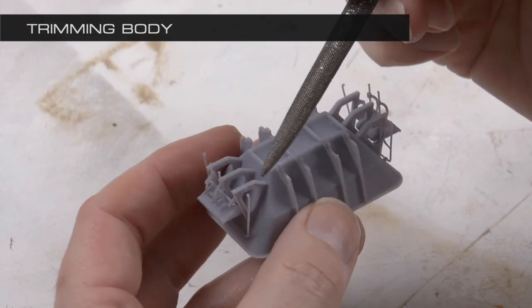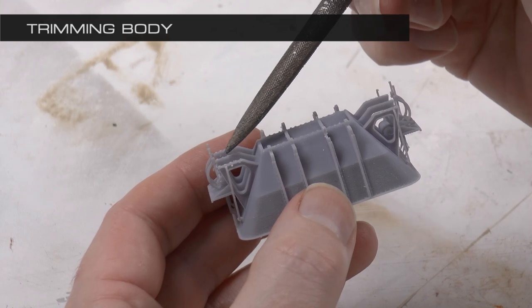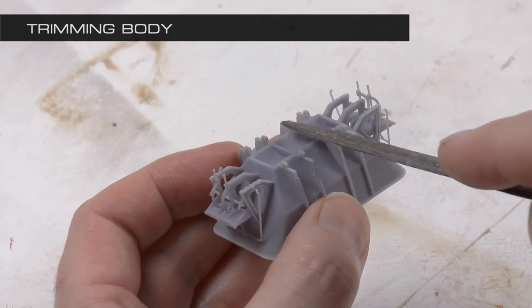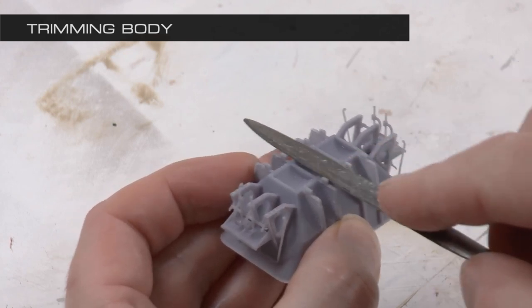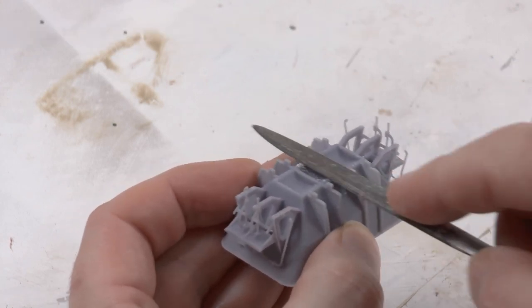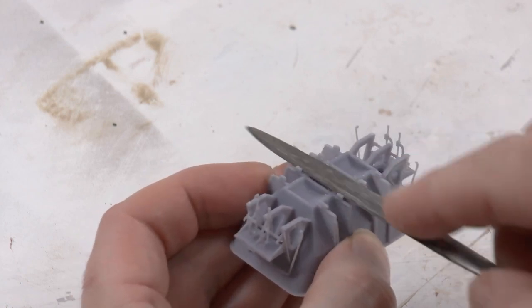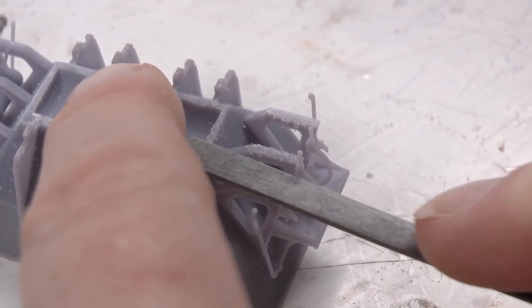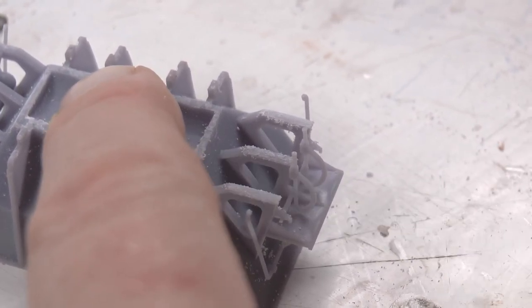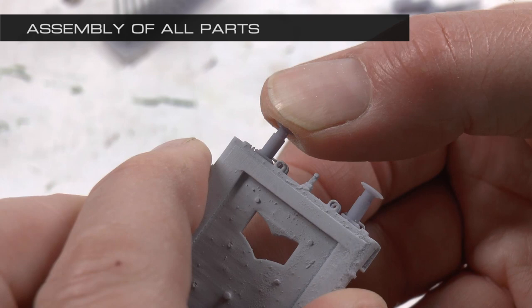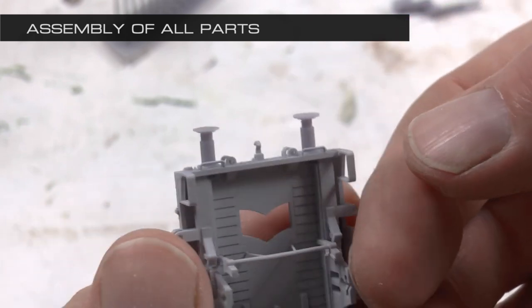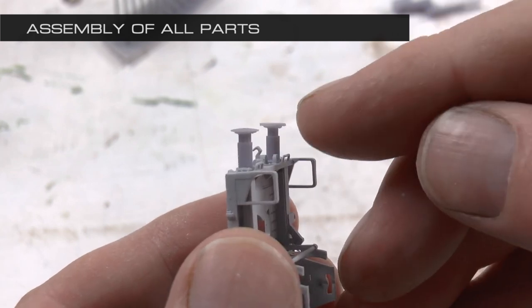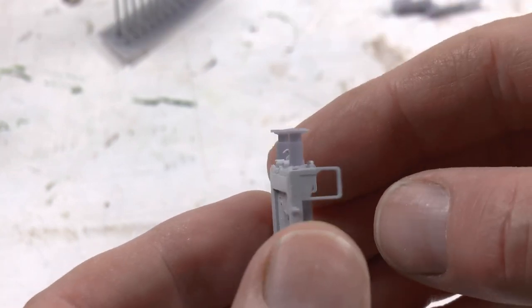Here are also some remains of supports which need to be taken care of, so I'm using a file for that like this. With the supports gone, we can now assemble these buffers. And if you look at the buffers, one of them is curved and the other one is flat. So this one's curved and this one's flat, and that's the way it should be—that's the way it is in real life.